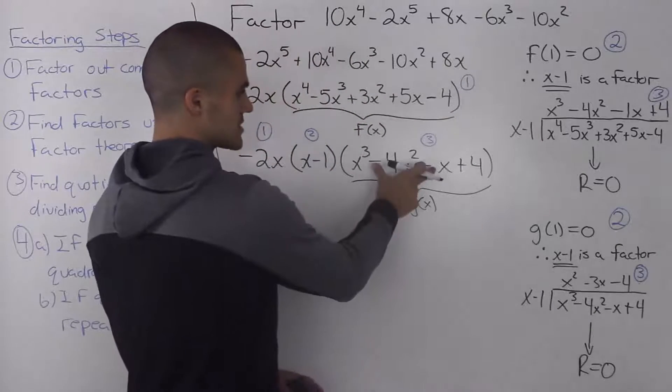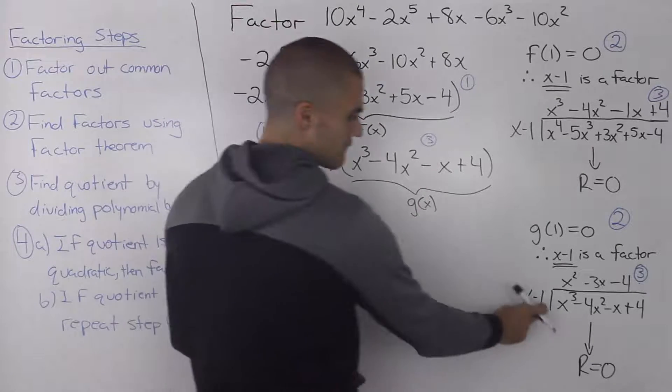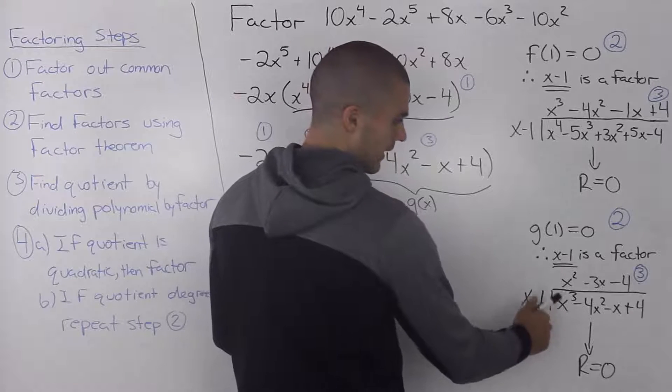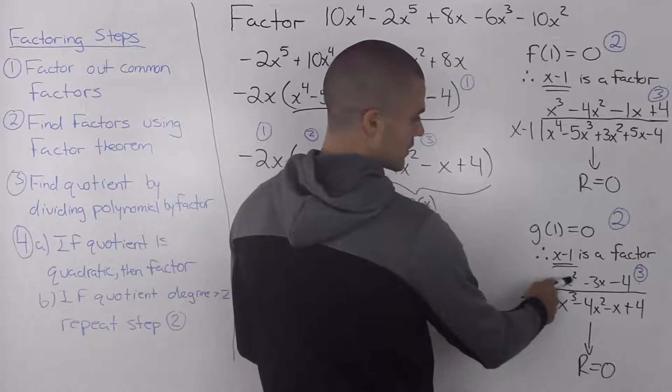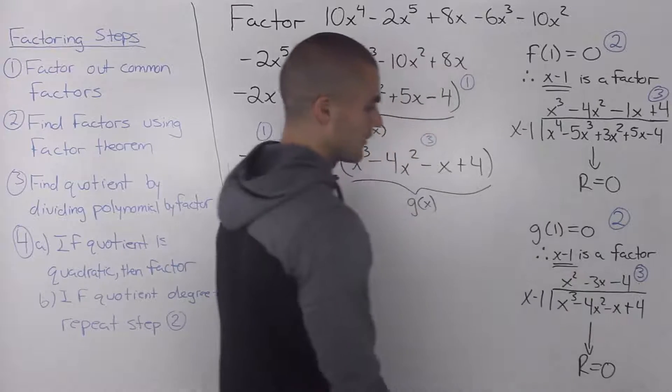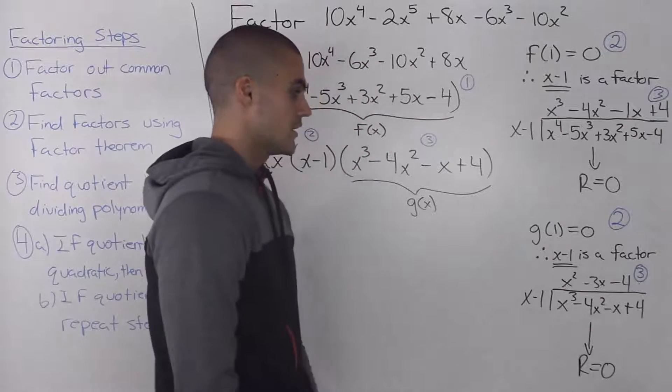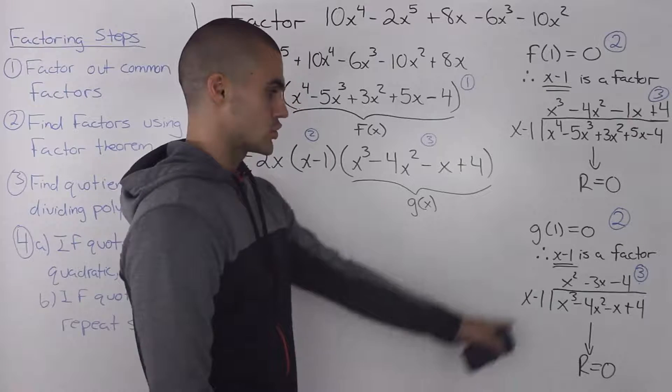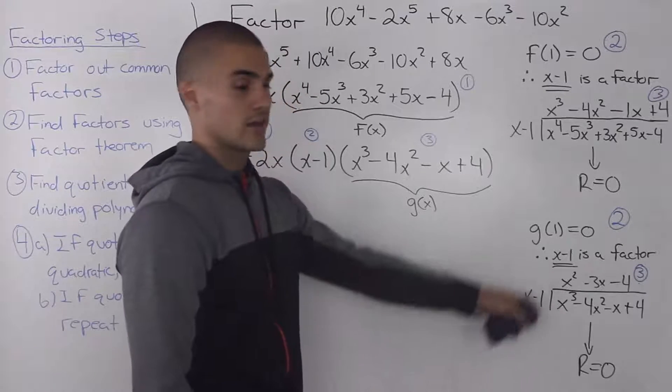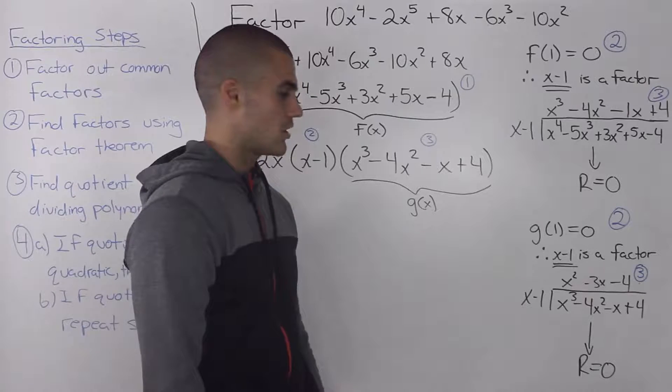So after finding the factor of x minus 1 in step 2, in step 3 we take this polynomial and divide it by that factor x minus 1, and we end up getting a result of x squared minus 3x minus 4. And as usual, you should get a remainder of 0 at step 3. You should pause the video and try to do this yourself and make sure that you are getting the same result.